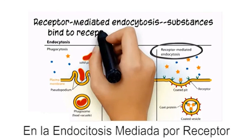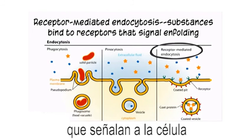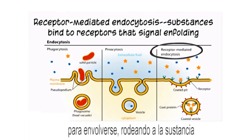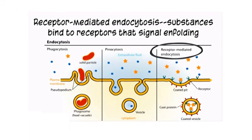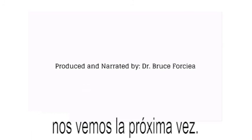In receptor-mediated endocytosis, substances attach to membrane receptors that signal the cell membrane to enfold around the substance. We hope you have learned something about cell transport and see you next time.